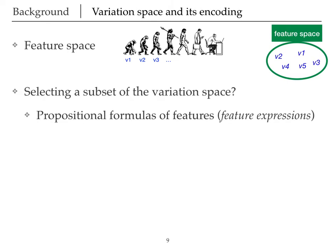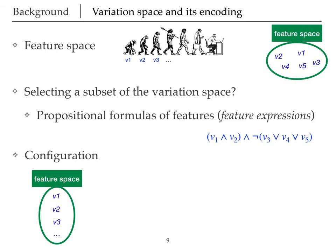Then, we use propositional formulas of features to select a subset of our variation space. Finally, we have configurations, which are mappings from feature space to Boolean values.